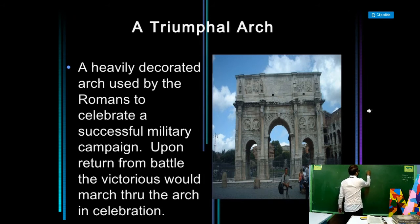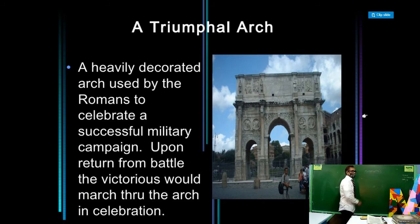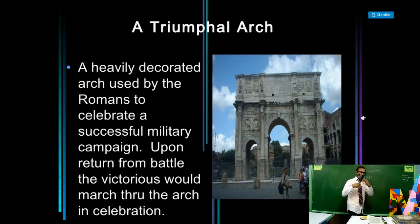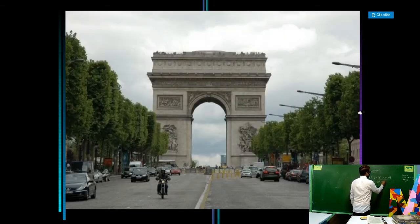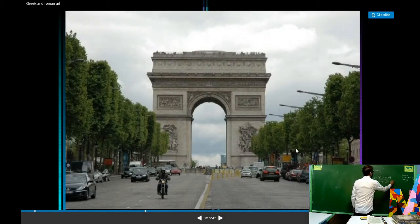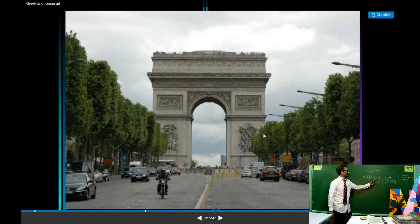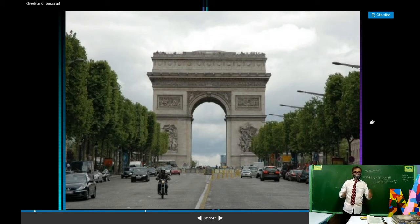The triumphal arc is a commemorative building dedicated to all the generals who triumphed in war, serving as their reward. Their names and statues would be placed on top of it — that is why it is called the triumphal arc. Until now, in Rome, Italy, triumphal arcs still exist as heritage buildings.